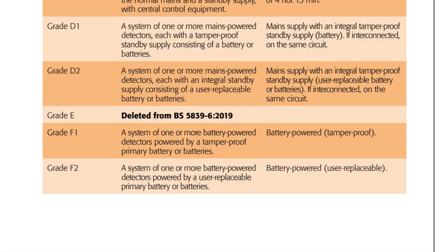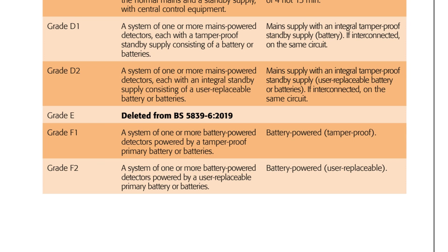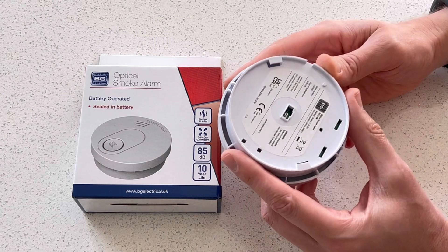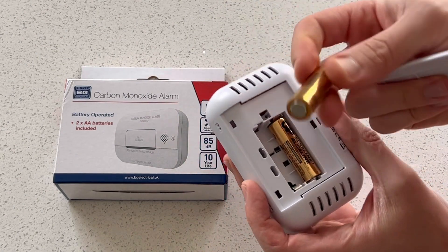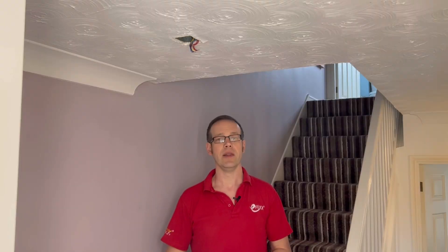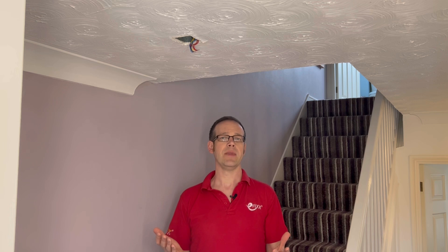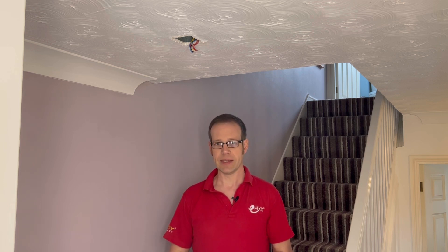Grade E went the same way as Grade B and was deleted in the 2019 update of BS 5839-6. Grade F again splits into two subsets, F1 and F2, with similar characteristics to D1 and D2. The F1 system is a system of one or more battery-powered detectors powered by a tamper-proof primary battery or batteries, and the F2 is a system of one or more battery-powered detectors powered by a user-replaceable primary battery or batteries. The one key difference between Grades D and F is that the F grades are powered only by batteries, with no mains power whatsoever.